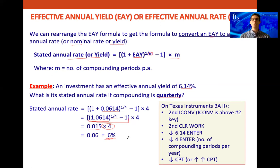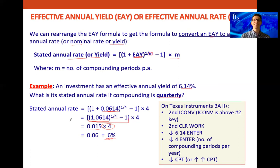Just before we finish this class, I wanted to mention that we may not see this formula very much in quants. But when we get to the fixed income reading, we're going to be doing something called the bond equivalent yield. Once we've got the effective annual yield, we can plug it in here and work out the bond equivalent yield for any frequency we like. That's going to come much, much later, but I just wanted to mention it now so that when we get there, hopefully we'll remember that we've seen this formula somewhere before.